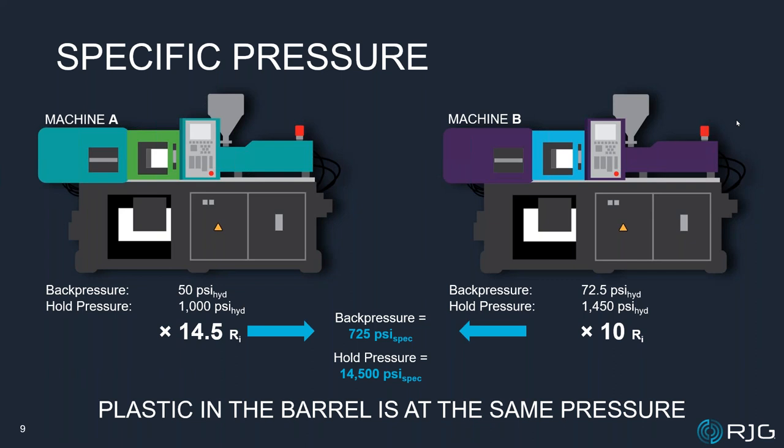This is why we need to know the intensification ratio on our molding machines. We shouldn't have to go to the machine manual every time we need to calculate one of these values. This, among other things, should be labeled on a laminated card somewhere near the controller.